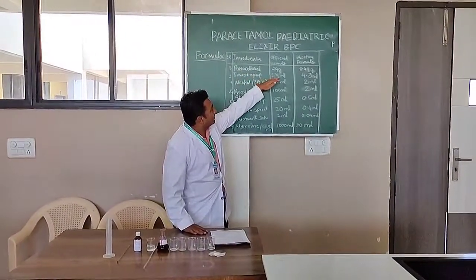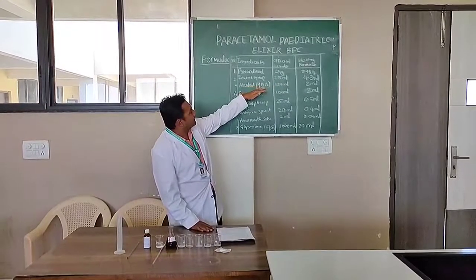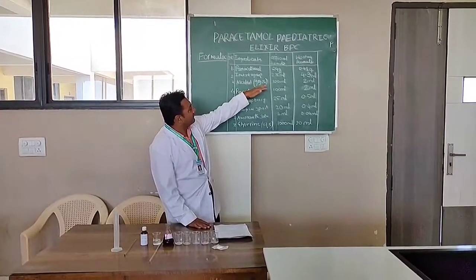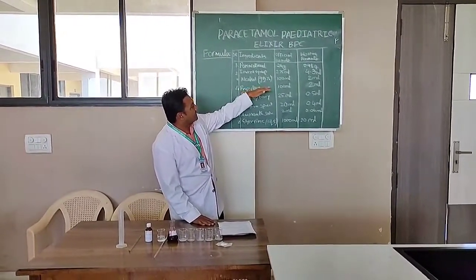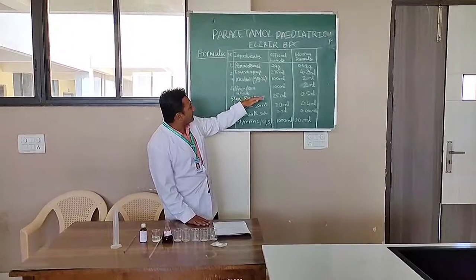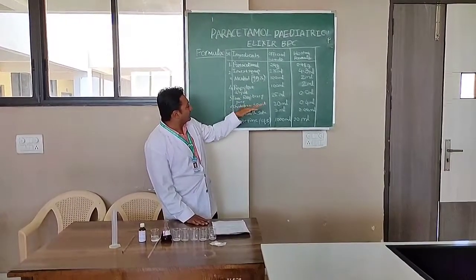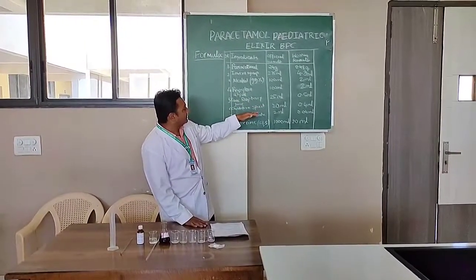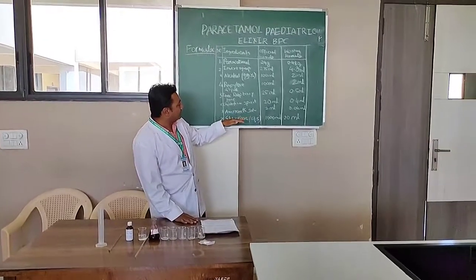The official formula is: paracetamol 4 grams, inverted syrup 25 ml, alcohol 95% 100 ml, propylene glycol 100 ml, raspberry juice 25 ml, chloroform spirit 20 ml, and alcohol 2 ml.